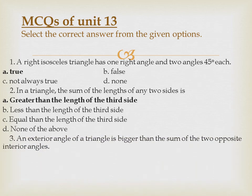The third one is: an exterior angle of a triangle is bigger than the sum of the two opposite interior angles. It's a false statement.